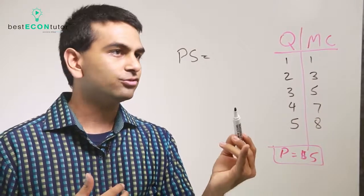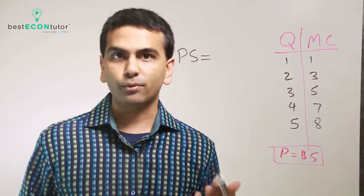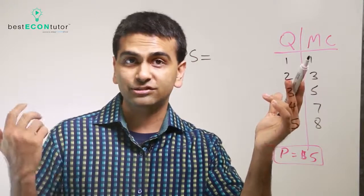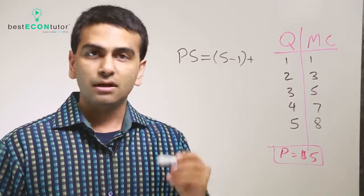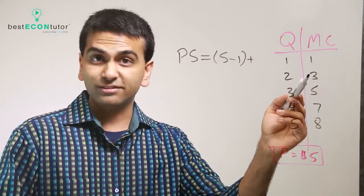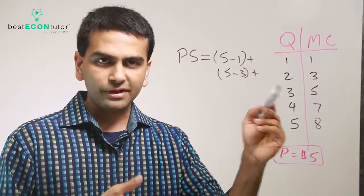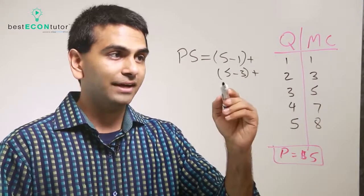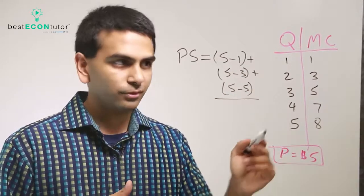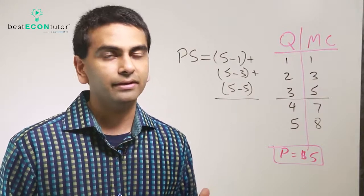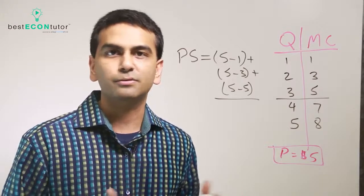If you're selling this good for $5 each and it costs you $1 to make the first item, you make a $4 profit from selling it — that's $5 minus $1. For the second item it costs $3 to produce, so that's $5 minus $3. For the third item it costs $5 to make and you sell it for $5, so you get no producer surplus. You wouldn't want to make the fourth item because it costs $7 to make — selling for $5 means you'd lose $2.